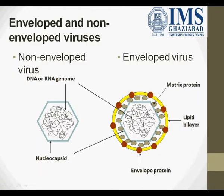Next, we come to the envelope. There are two types of viruses in nature: enveloped viruses and non-enveloped viruses. Non-enveloped viruses contain only the nucleocapsid or the nucleic acid material. Enveloped viruses have an outer membrane with spikes or glycoproteins. As you can see, in a non-enveloped virus there is only a capsid as the outer layer with the genetic material inside. In an enveloped virus, the outer layer is the envelope with envelope proteins on it, made up of a lipid bilayer, followed by matrix proteins, then the capsid, and finally the genetic material inside.